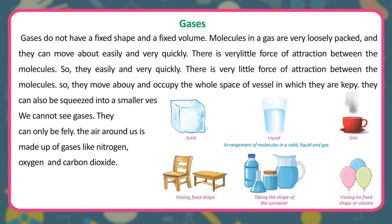Gases do not have a fixed shape and a fixed volume. Molecules in a gas are very loosely packed, and they can move about easily and very quickly. There is very little force of attraction between the molecules. So they move about and occupy the whole space of the vessel in which they are kept. They can also be squeezed into a smaller vessel. We cannot see gases — they can only be felt. The air around us is made up of gases like nitrogen, oxygen, and carbon dioxide.